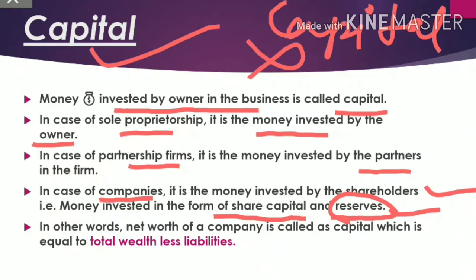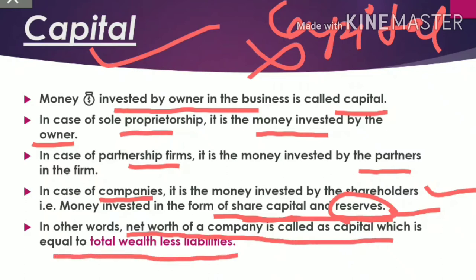In the case of a company, capital includes share capital as well as reserves. We call this net worth. The net worth of a company is called capital, which is equal to total assets less liabilities. So after deducting the liabilities from total assets, what remains is the capital.